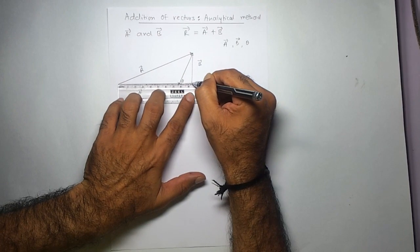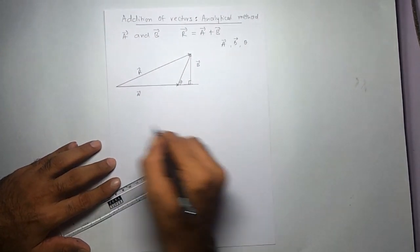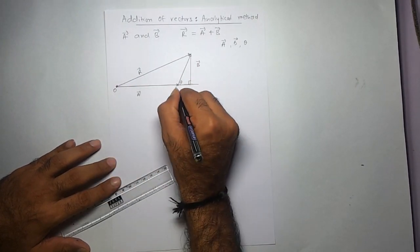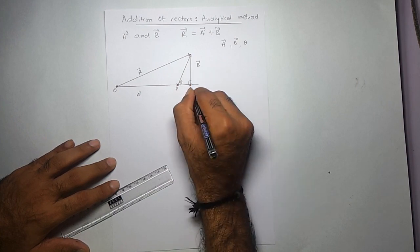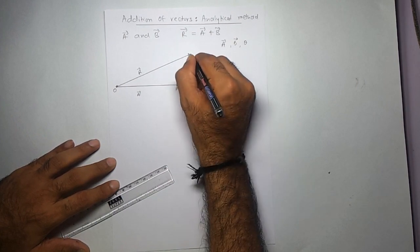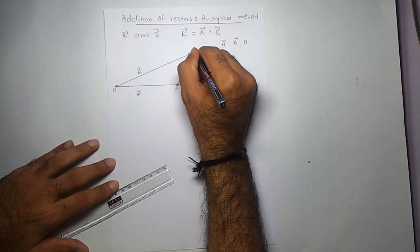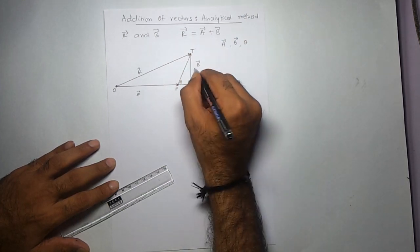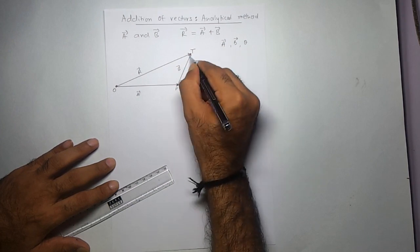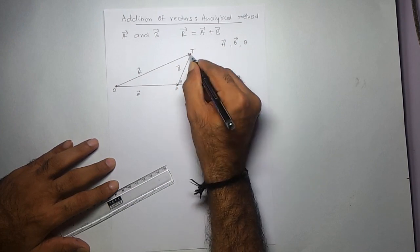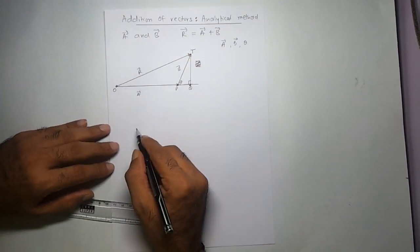Let me begin by completing this triangle. I'll draw a perpendicular such that this angle is 90 degrees. I'll call this point O, this particular point B, this point Q, and this point P. This is vector B, and this is theta.